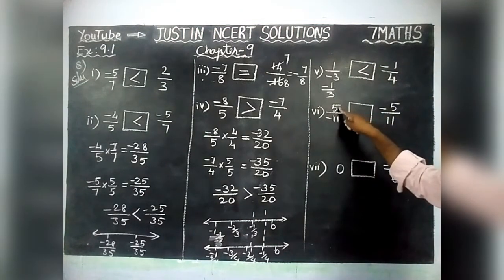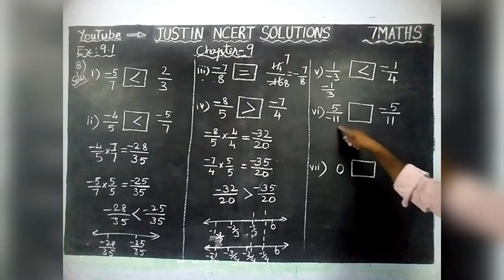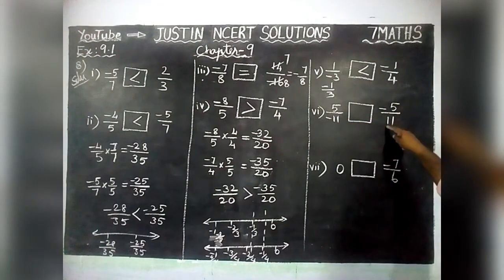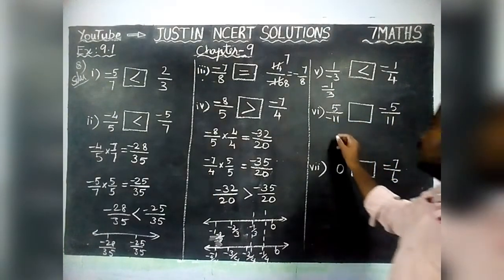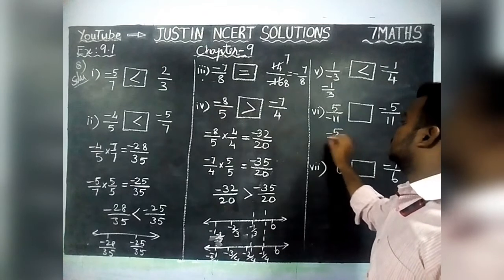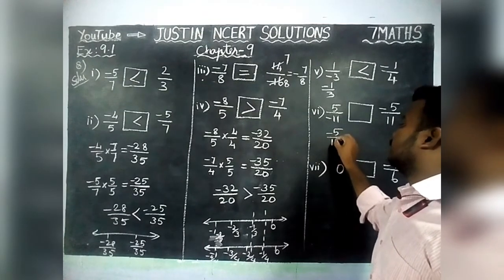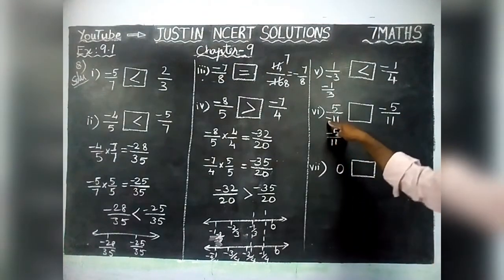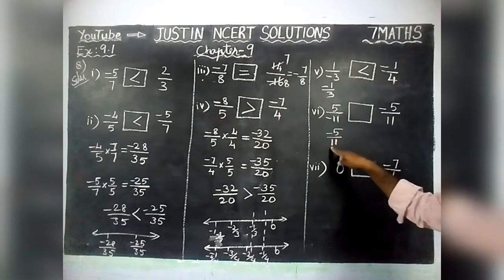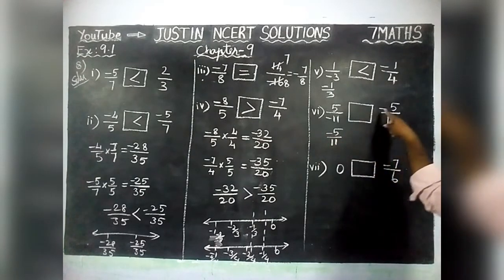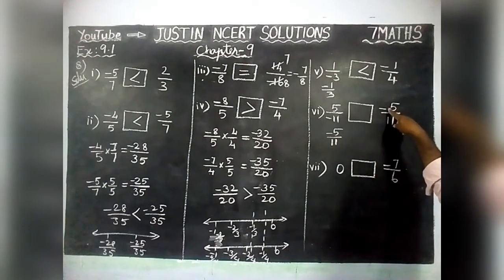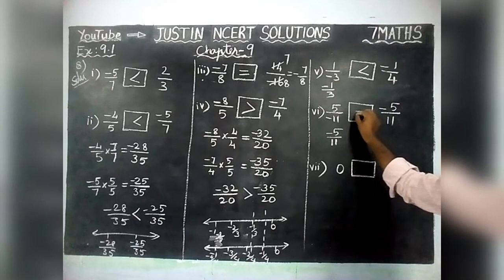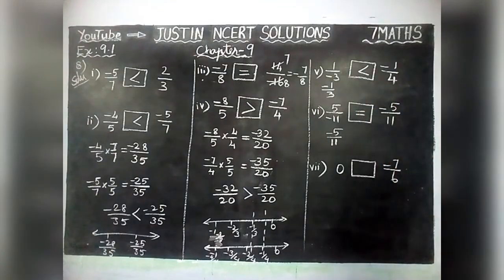Sixth question: 5 by minus 11 and right-hand side minus 5 by 11. The minus is in the denominator, so we write it as minus 5 by 11. Right-hand side also has minus 5 by 11. Therefore, this is equal.